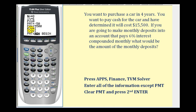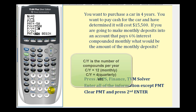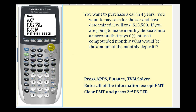PY stands for payments per year, which will be twelve. The compounds per year is also compounded monthly, so that's twelve as well. Now we'll go back up to PMT for payment.